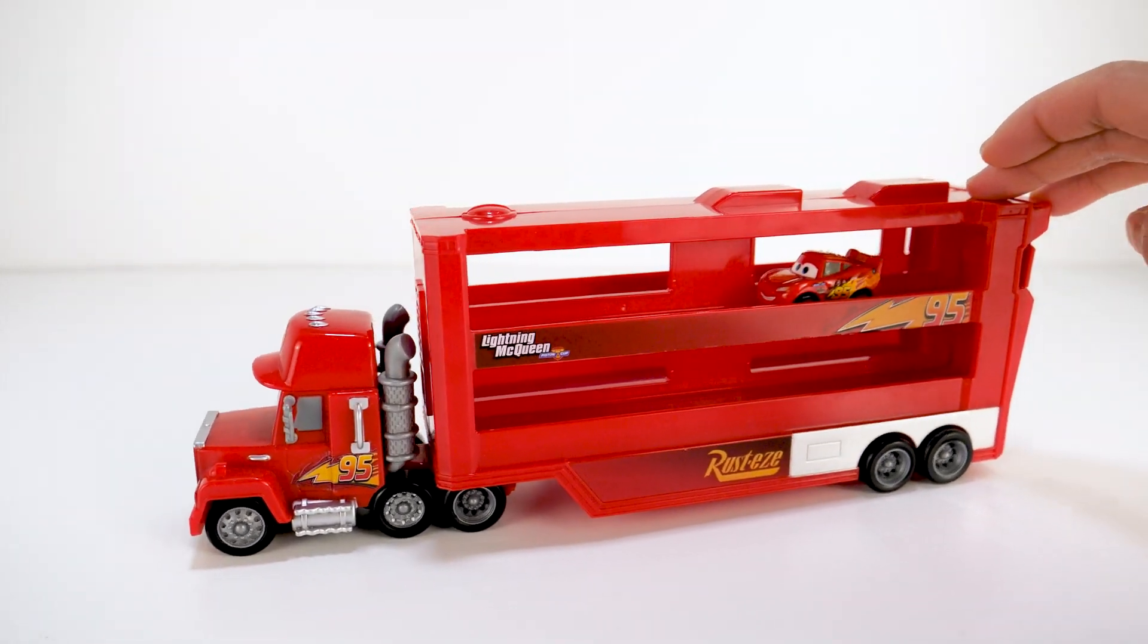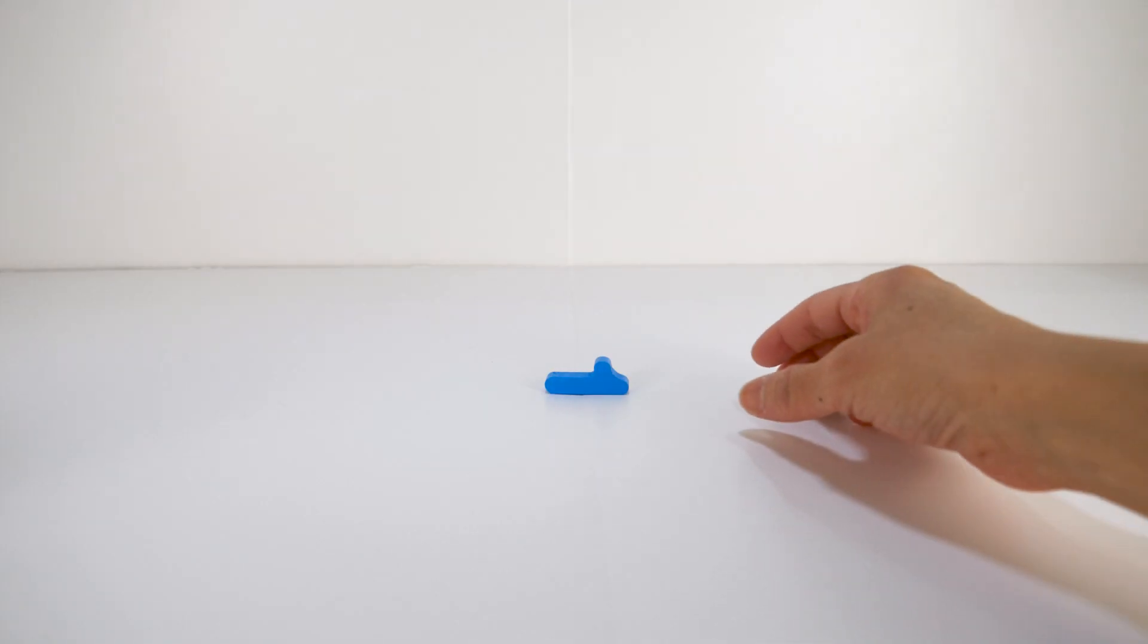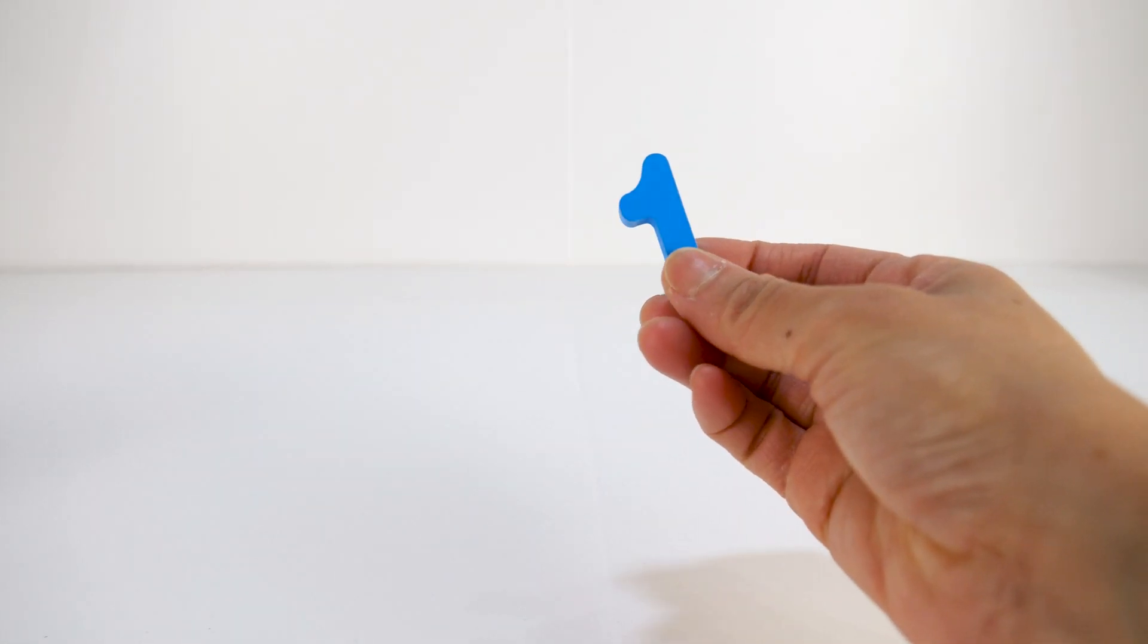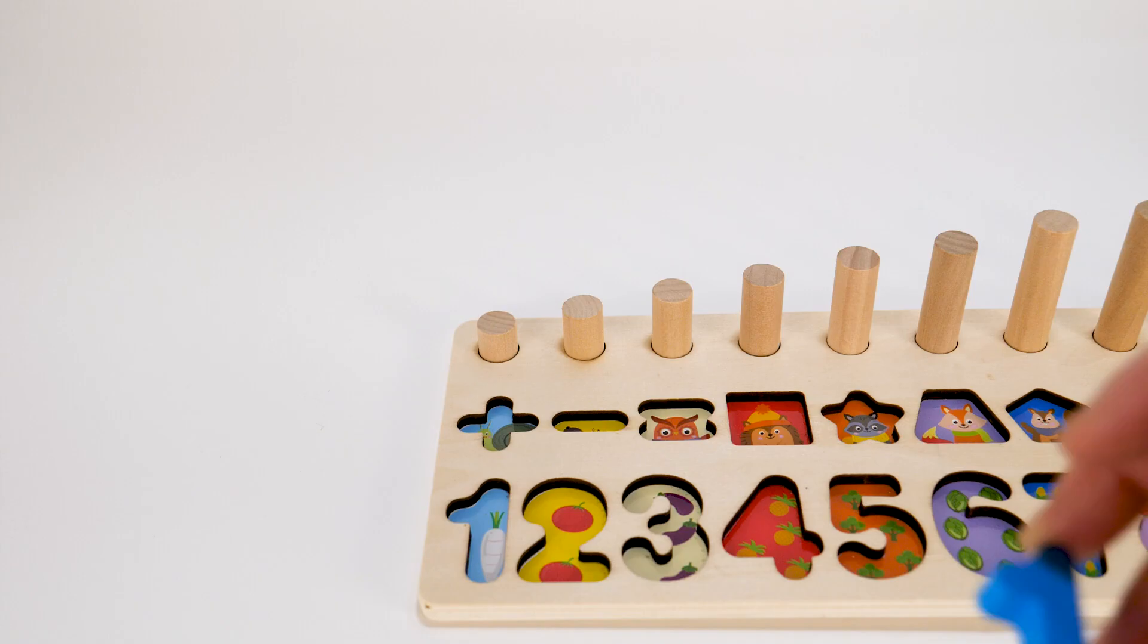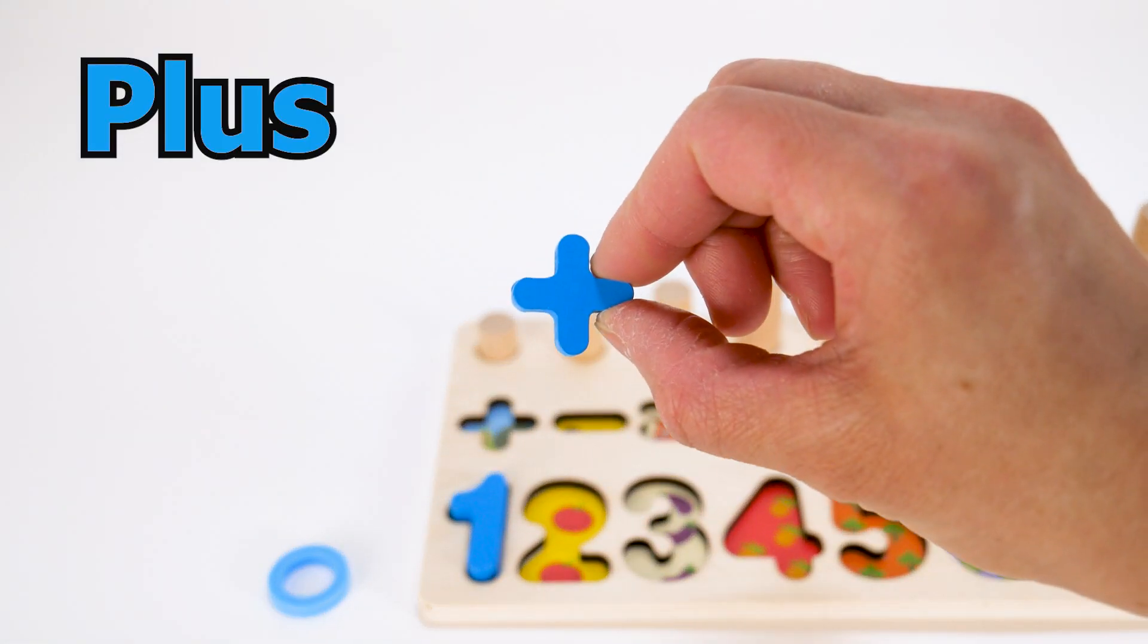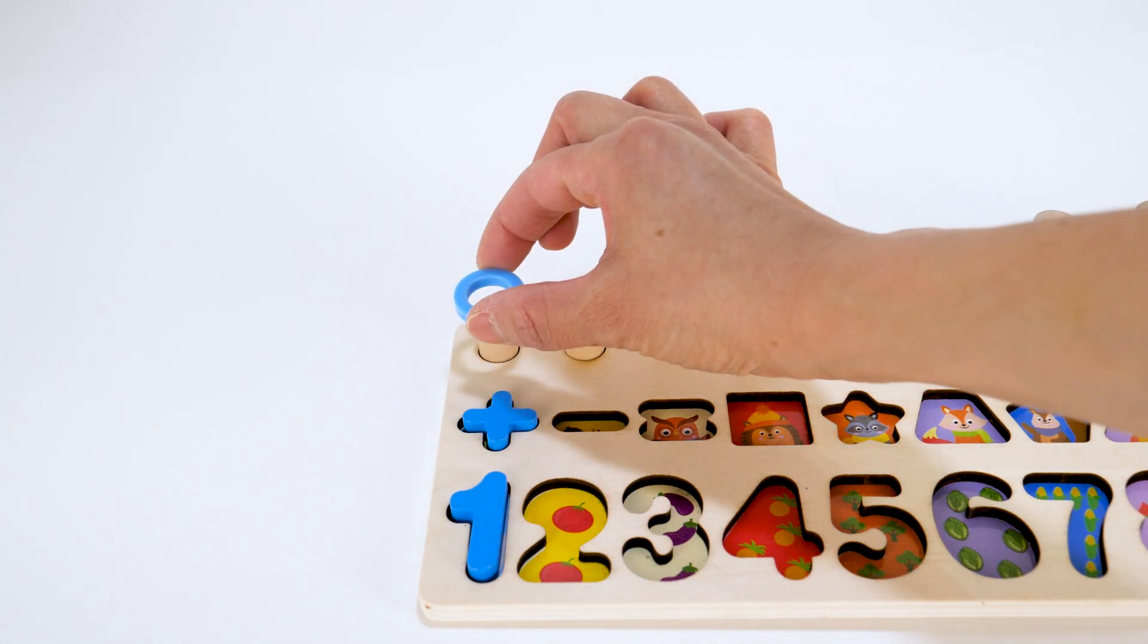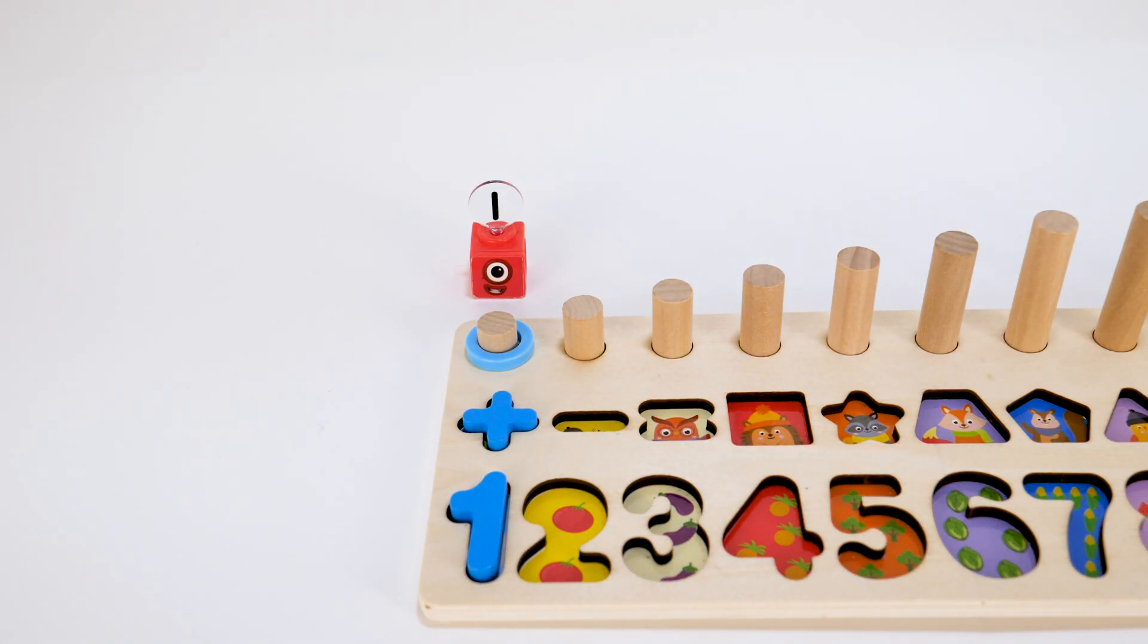Here comes one carrier truck with Lightning McQueen. We got our first puzzle piece, the number one. Oh, what do we have here? Plus sign. One blue ring. Yay! We saved number block one.